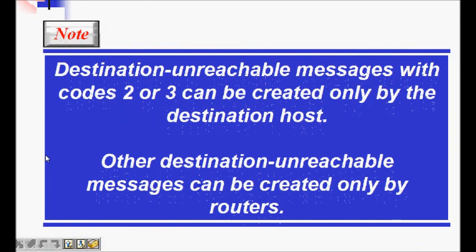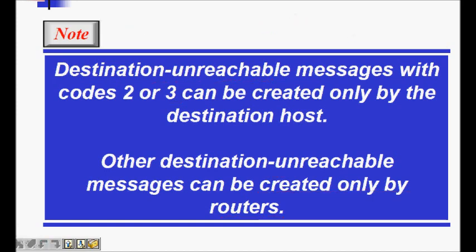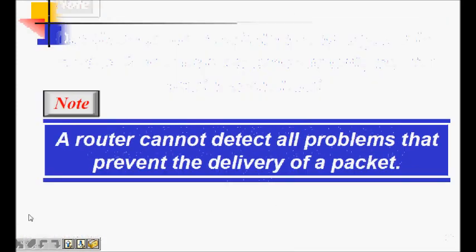Destination unreachable messages with codes 2 and 3 can only be created by the destination host. For example, if the destination doesn't want to process a message, it sends a reply to the source saying destination is unreachable, with type 3 but a different code. Other destination unreachable messages can only be created by routers. A router cannot detect all problems that prevent delivery of a packet.